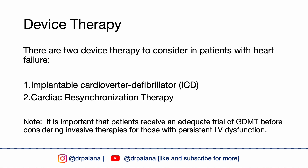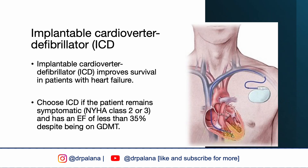Patients with HFrEF who meet specific criteria may benefit from placement of an implantable cardioverter-defibrillator (ICD) or a cardiac resynchronization therapy (CRT) pacemaker. It is important that patients receive an adequate trial of GDMT before considering invasive therapies. ICD improves survival in patients with heart failure. Choose ICD as the right answer if the patient remains symptomatic at NYHA class 2 or 3 and has an ejection fraction less than 35% despite being on GDMT.